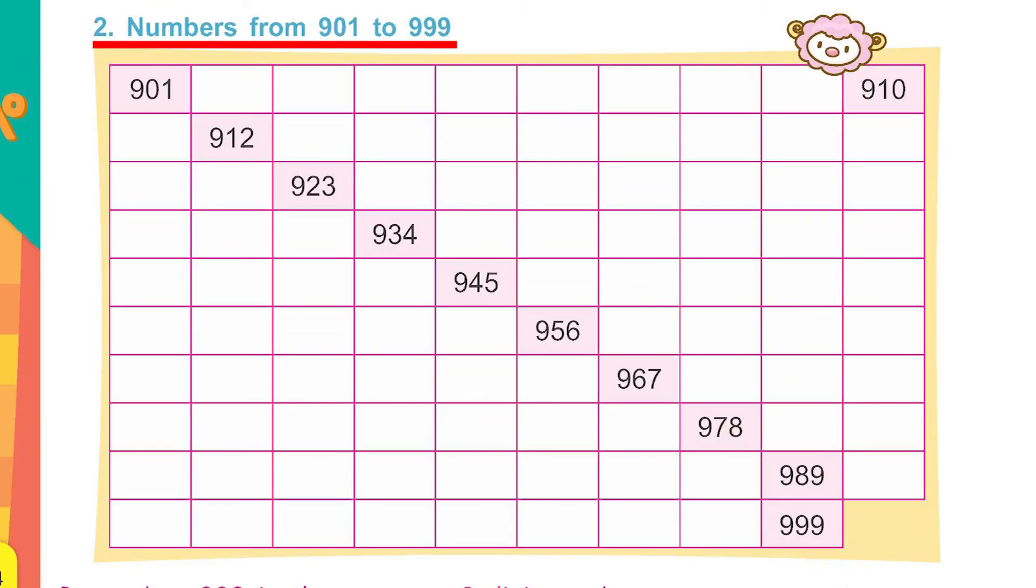Question number two states, numbers from nine hundred and one to nine hundred and ninety-nine. Few numbers are given. Rest you have to write yourself. Take the help of your teacher and start filling the blanks with the missing numbers.